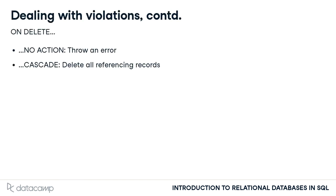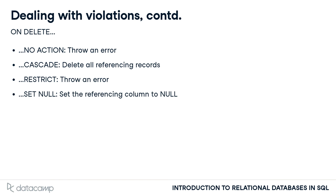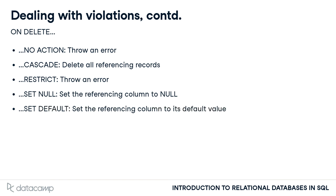There are even more options. The RESTRICT option is almost identical to the NO ACTION option — the differences are technical and beyond the scope of this course. More interesting is the SET NULL option, which will set the value of the foreign key for this record to null. The SET DEFAULT option only works if you have specified a default value for a column; it automatically changes the referencing column to a certain default value if the referenced record is deleted. Setting default values is also beyond the scope of this course, but this option is still good to know.